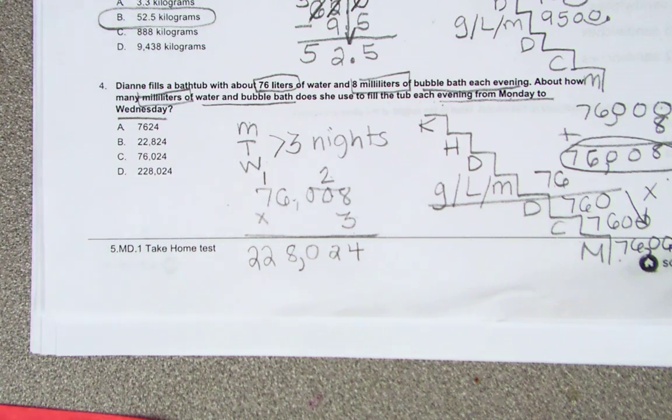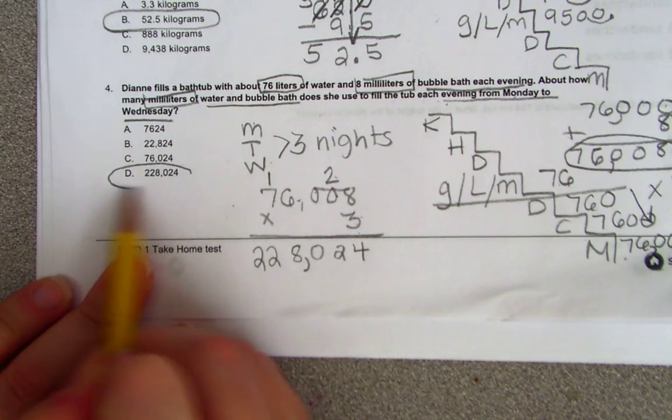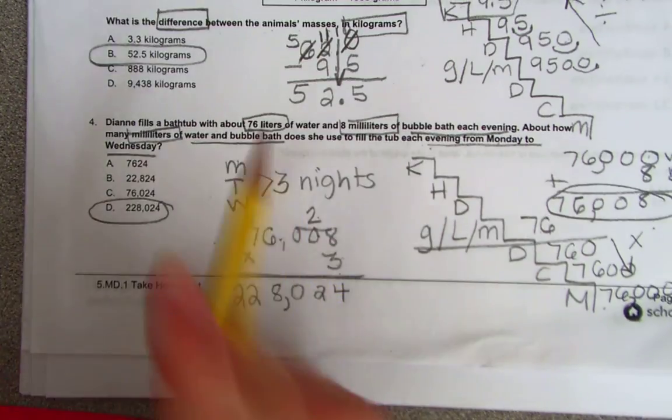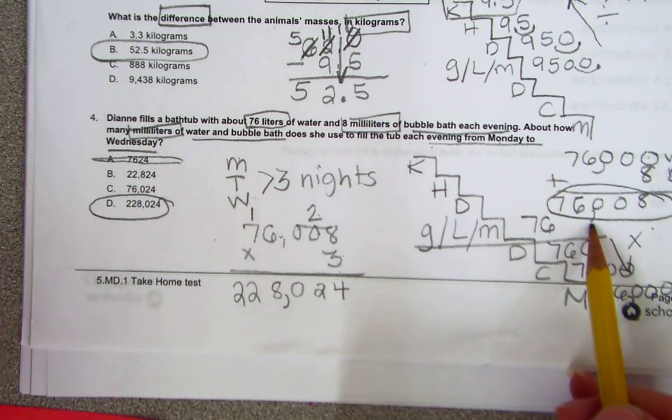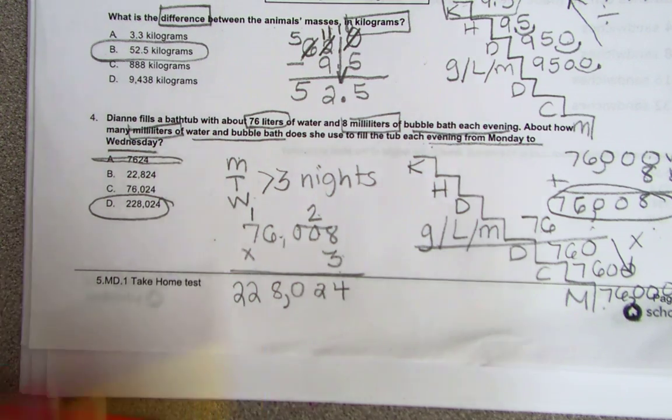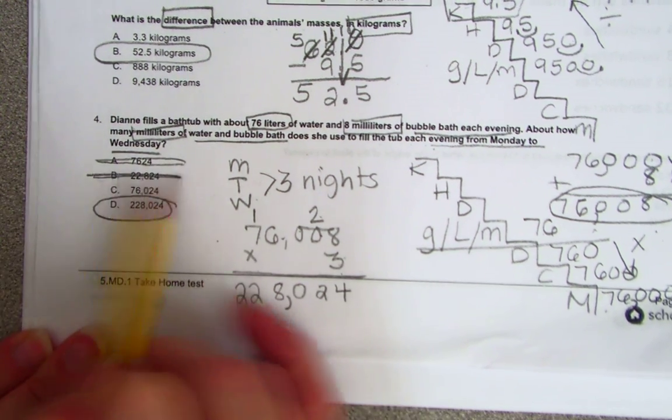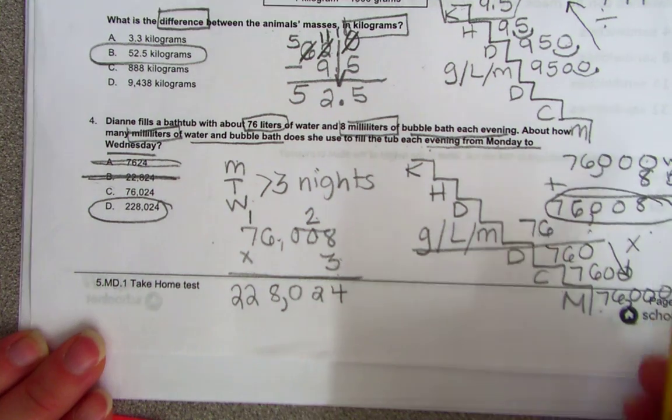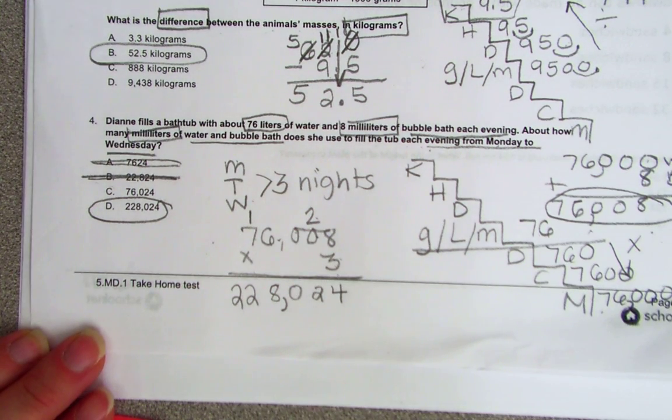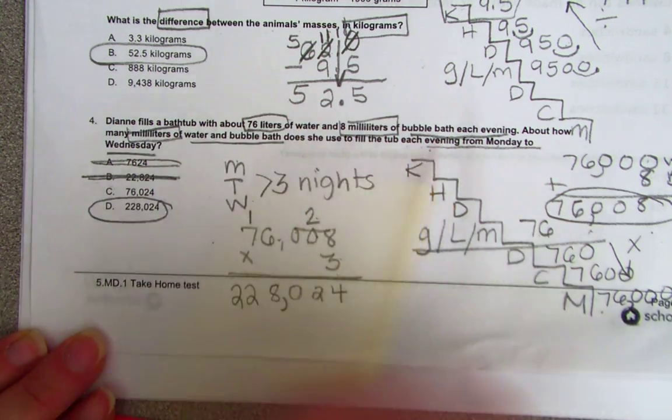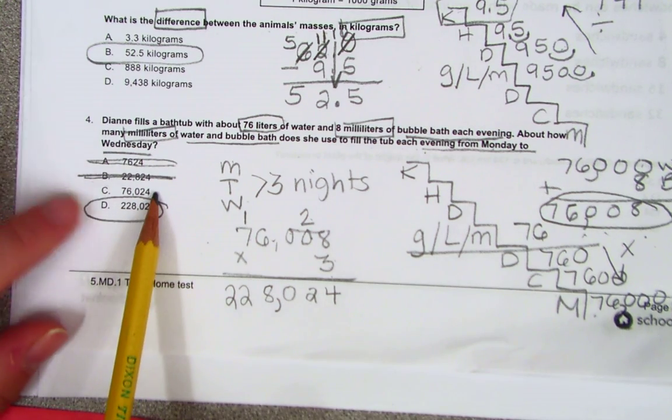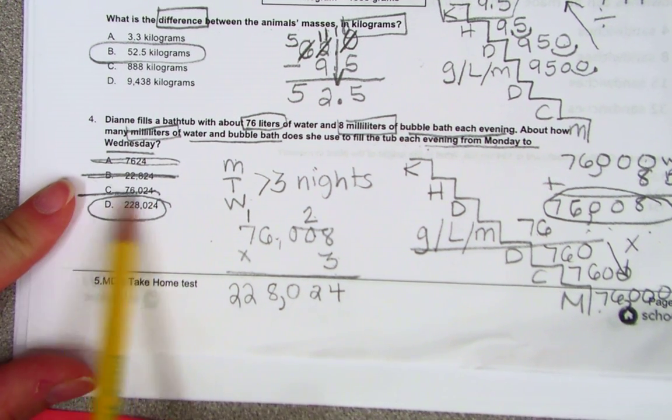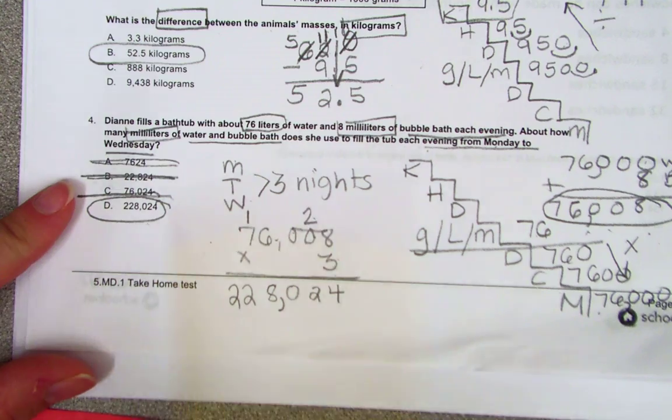So therefore my answer is D. Now had you used process of elimination, you would have realized right off the bat that this one was wrong because we already had 76,000 the first night. You could have possibly eliminated that one also because you used 76,000. Now some of you forgot to convert and you just took 76 times 8. So if you didn't watch me the first time, that's what you would have done. You would have known once you've gotten 76,008 that this possibly couldn't be the answer because you would have had to take it times 3 nights, giving you D.